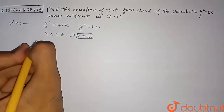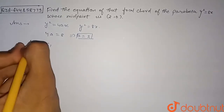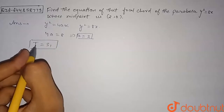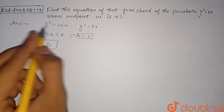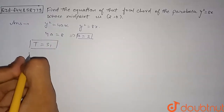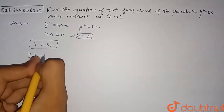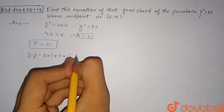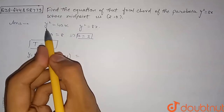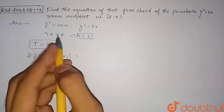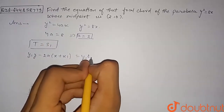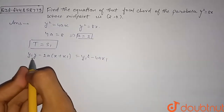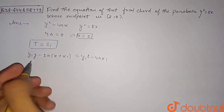We will use T = S1. Here the value of T for this general parabola is the tangent, given in point form as y₁·y − 2a(x + x₁). The value of S1 is obtained by substituting the point (x₁, y₁) into the equation, giving y₁² − 4a·x₁. This is the chord with given middle point (x₁, y₁).